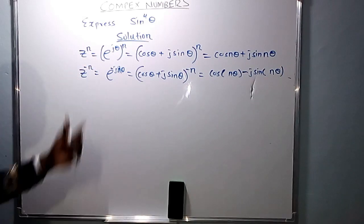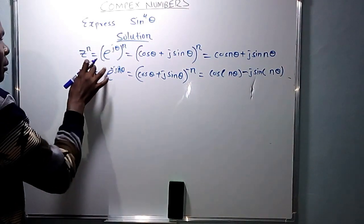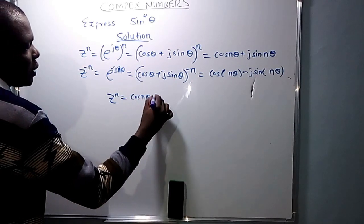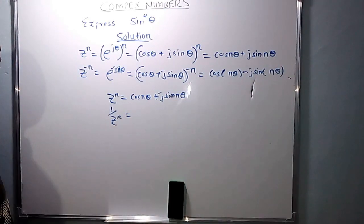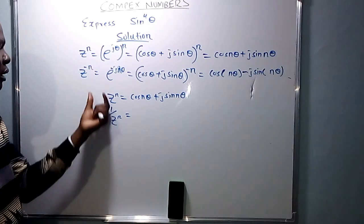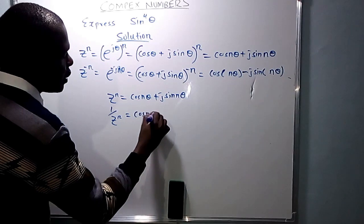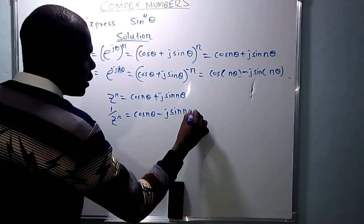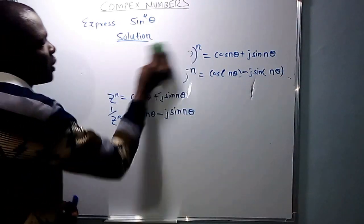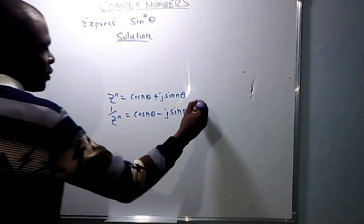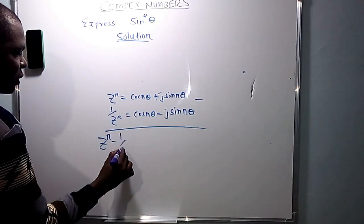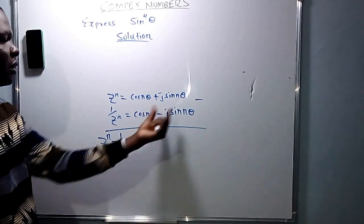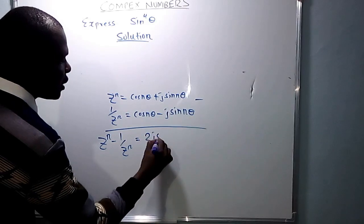From the two equations: the first case, z raised to power n equals cos n theta plus j sine n theta. The second case, z raised to negative n equals 1 over z raised to power n, and 1 over z raised to power n equals cos n theta minus j sine n theta. Now, since we need sine, we subtract the two equations. So the difference, z^n minus 1 over z^n, equals 2j sine n theta.